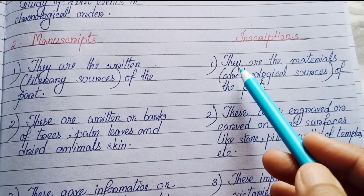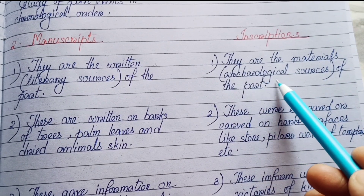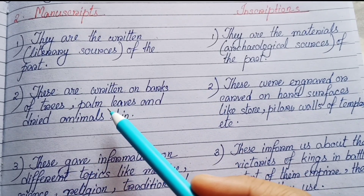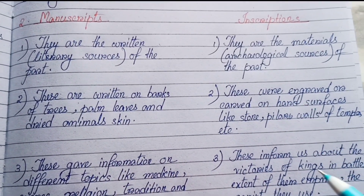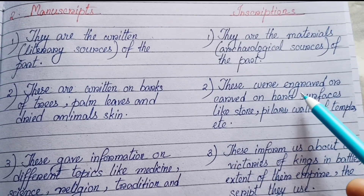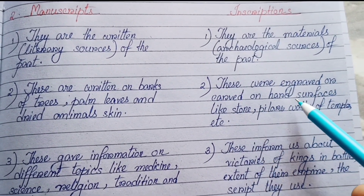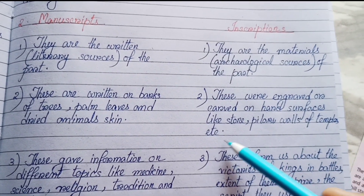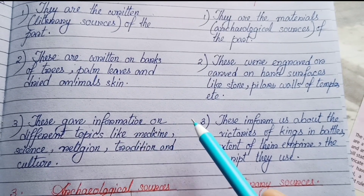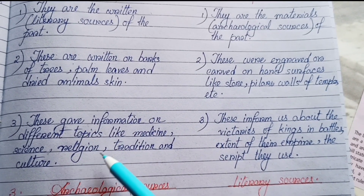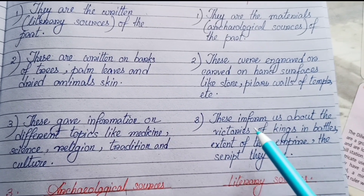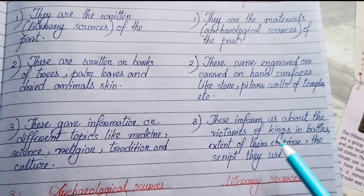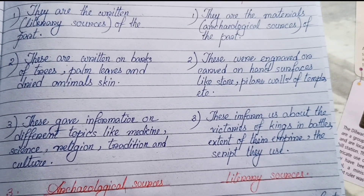Manuscripts are written on bark of trees, palm leaves and dried animal skin. Inscriptions were engraved or carved on hard surfaces like stone pillars and walls of temples. Manuscripts give information on different topics like medicine, science, religion, tradition and culture. Inscriptions inform us about the victories of kings in battles, the extent of their empire and the script they used.